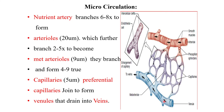The arteriole has a diameter of 20 microns, the metarteriole has a diameter of 9 microns, and the capillary has a diameter of 5 to 7 microns. The preferential capillaries then join to form venules, which drain into a vein.